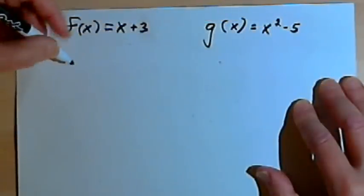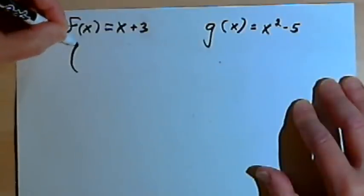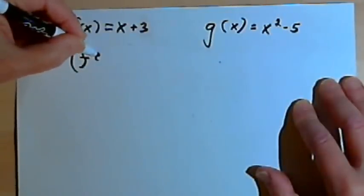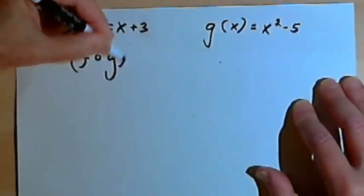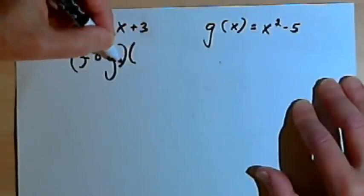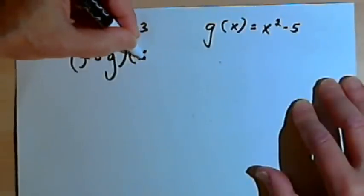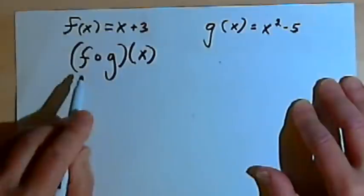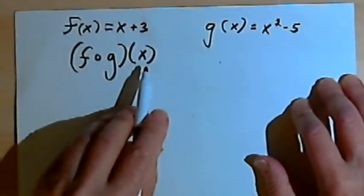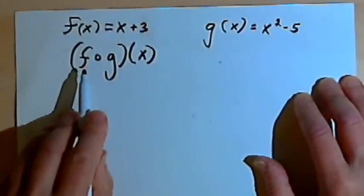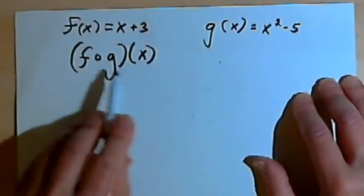And then you're told to find this thing: inside parentheses you've got an f, a small closed circle, and then a g, close that parentheses, open up another one, and put an x in there. This is called the composition of these two functions. We read this as f composed g of x.